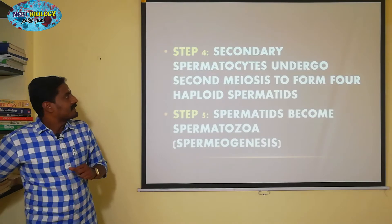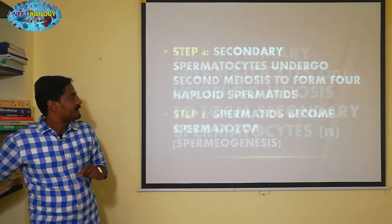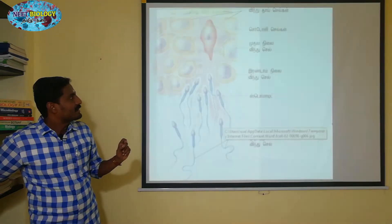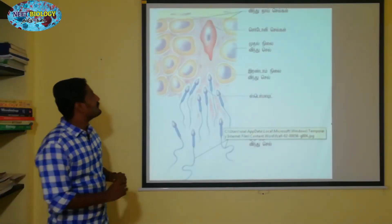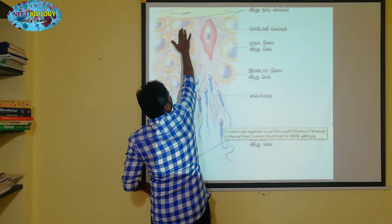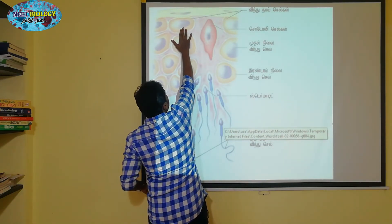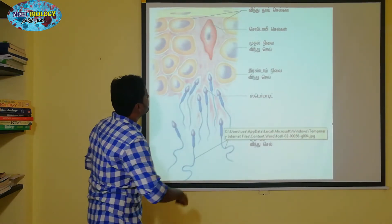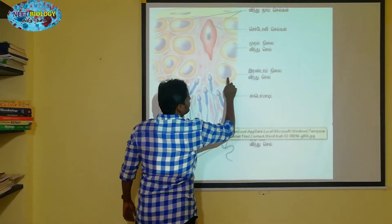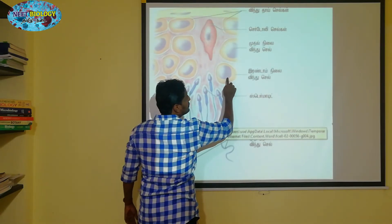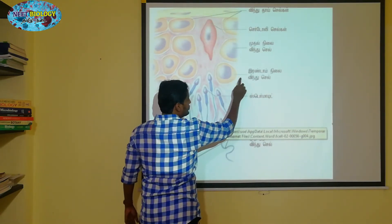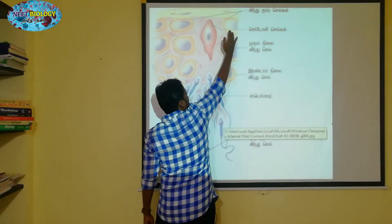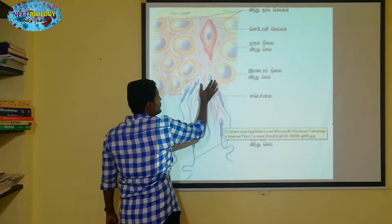This process is called Spermiogenesis. What is the process of Spermiogenesis? The spermatid transforms through Spermiogenesis. The process develops — the Spermiogenesis is developed.